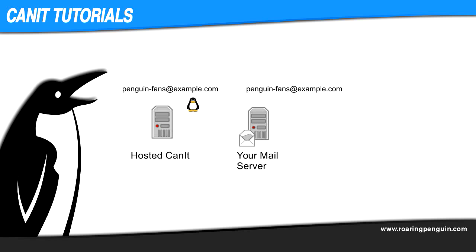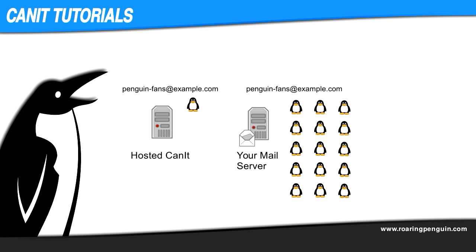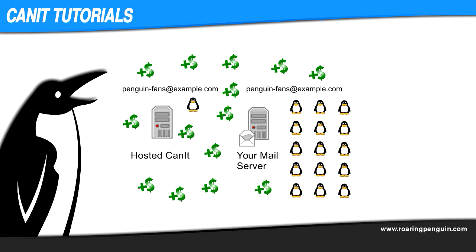On the other hand, suppose mail comes in for a single recipient, penguinfans.example.com. If your back-end mail server expands that out to a 30,000-member mailing list, we only see just the one address — though we would of course be happy to accommodate if you wanted to count it as 30,000.